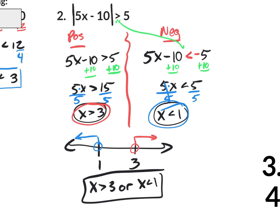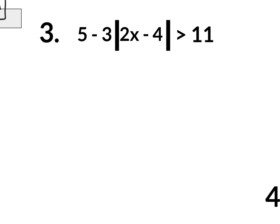Let's move on to a couple more interesting questions. Number 3 — step one on solving any absolute value equation or inequality is to isolate it, get it by itself. You have a 5 take away 3 times the absolute value. Don't say 5 take away 3 is 2 — that's incorrect. You have to get rid of each of these: the 5 and the negative 3. To start, you get rid of the 5 by subtracting 5 from both sides. Then we rewrite: we have negative 3 times the absolute value of 2x minus 4 is greater than 6.